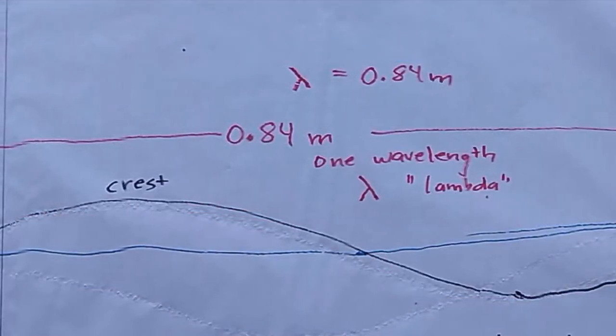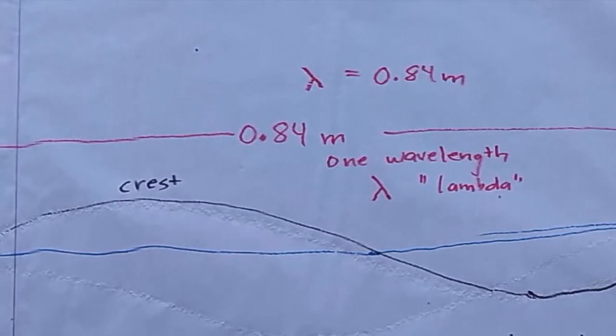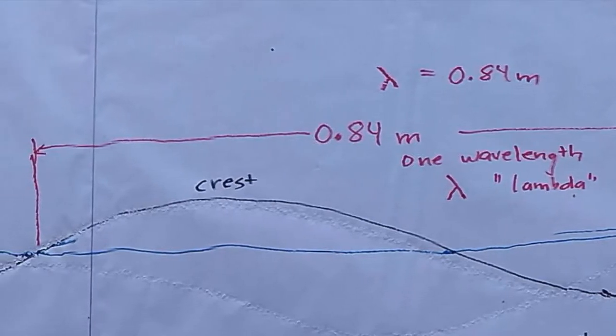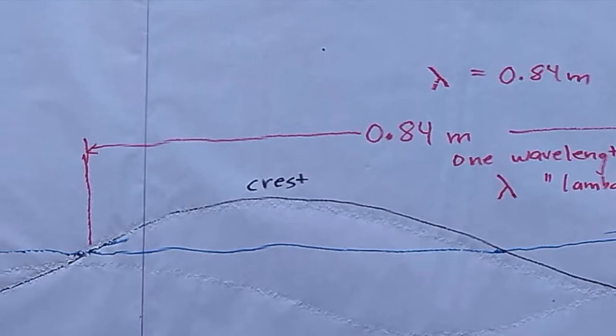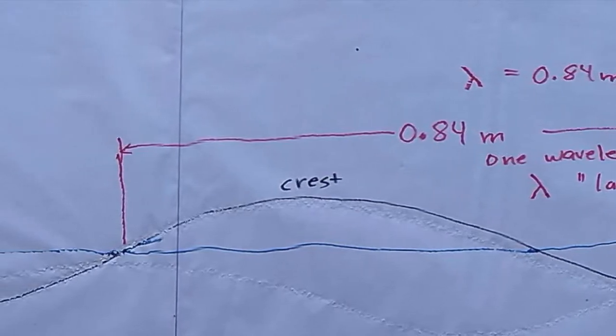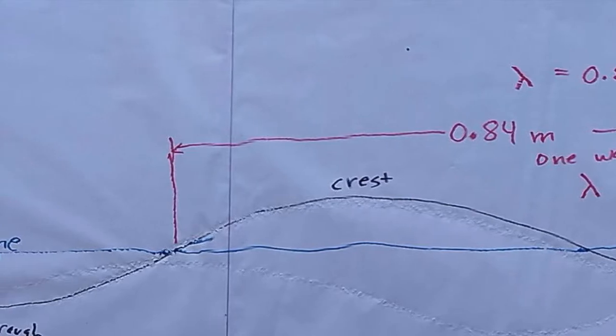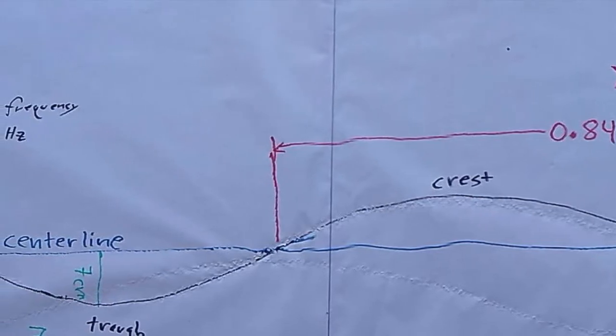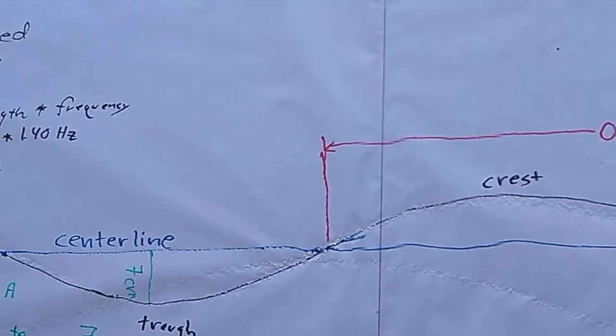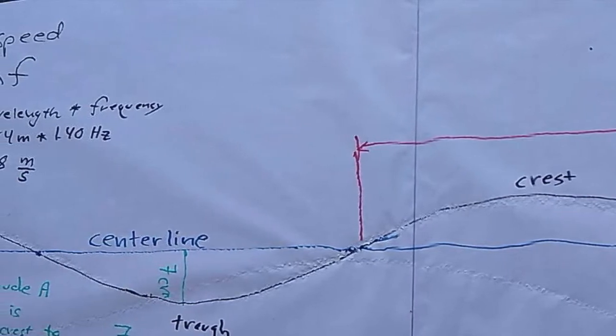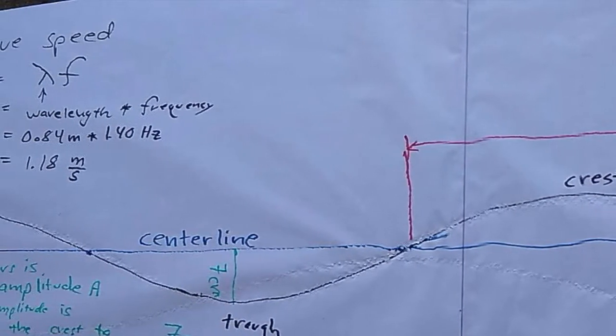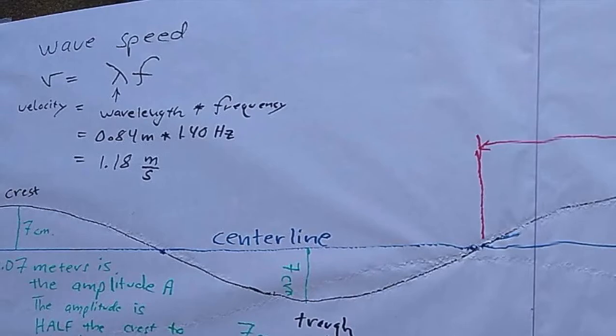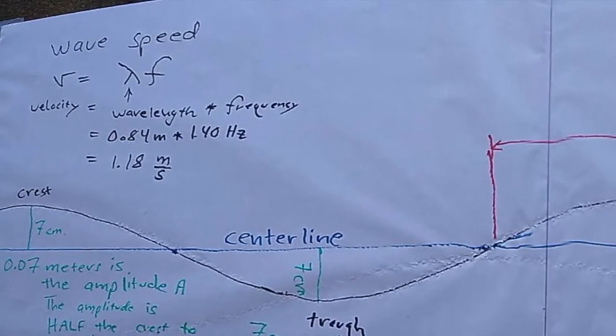The symbol for the wavelength is that upside down Y. It's actually the Greek letter lambda. It's a lowercase l. And we found that our wavelength was 0.84 meters. If you take the wavelength and multiply by the frequency of 1.4 hertz, you will get the speed of the wave. The formula wavelength times frequency yields the wave speed. And when you multiply them, you get 1.18 meters per second. That's the speed with which the ripstick was moving, with which the ripstick laid down the wave.